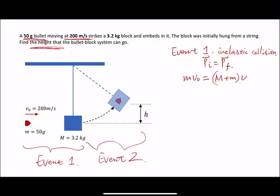So from this equation, we can solve the velocity after this inelastic collision. It's gonna equal to mv0 divided by the total mass. So if we plug in the numbers, we can obtain that the velocity equals to 3.1 m per second.